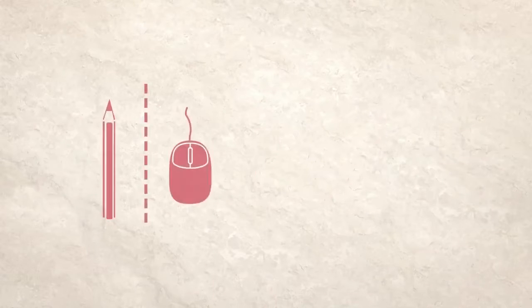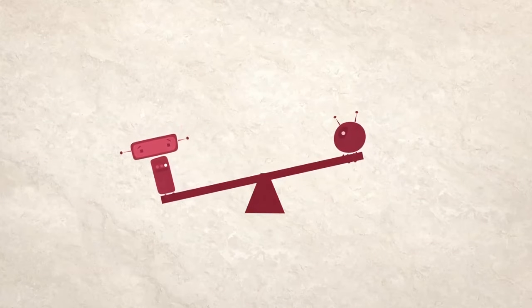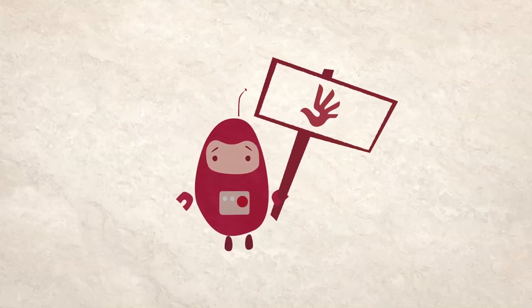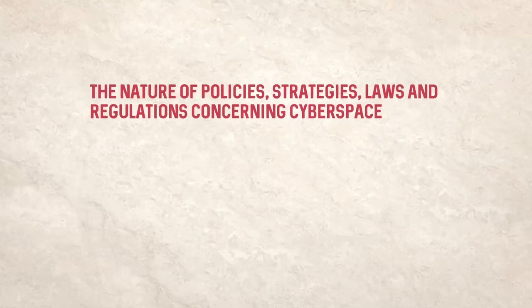What does regulated mean? Number one: A, to govern or direct according to rule. B, to bring under control of law or constitutional authority. Number two: to make regulations for or concerning, to regulate the industry of a country.